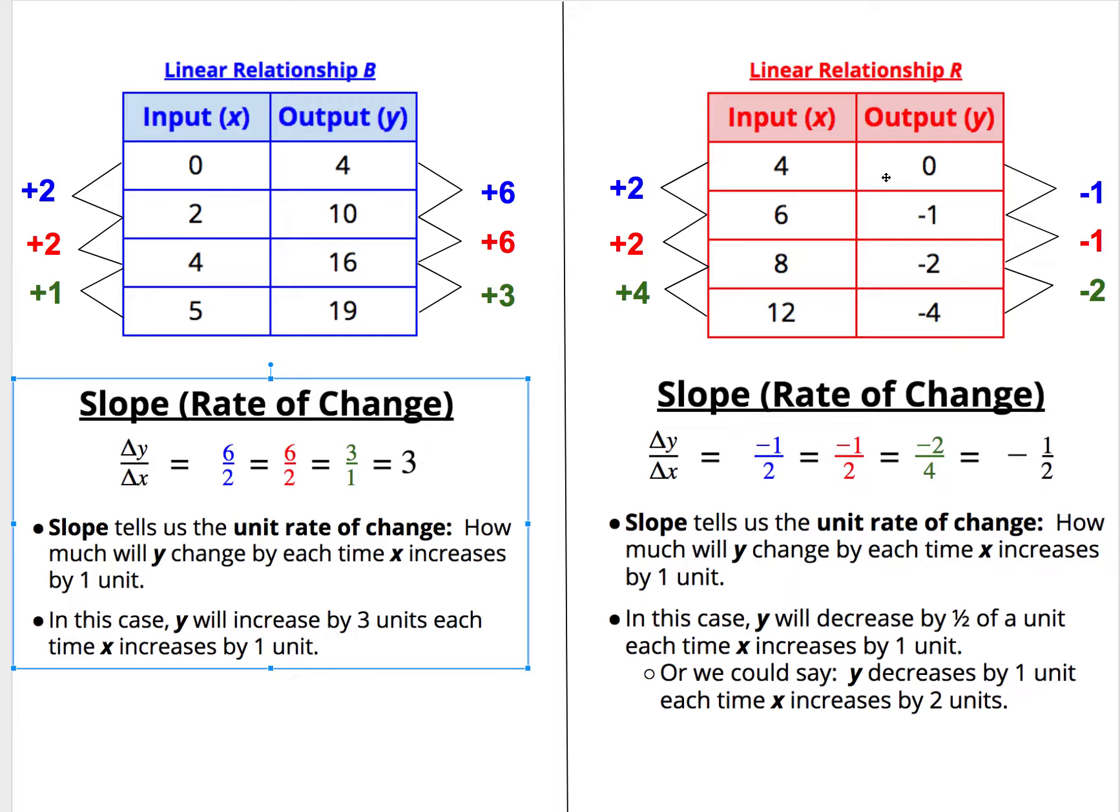We see another example in red over here. As we go from zero to negative one, the y decreases by one unit, we use a negative one for a decrease, and the x increases by two units from four to six. The same pattern repeats from row two to row three, we go down by one unit for the y from negative one to negative two, while the x goes up by two units from six to eight.